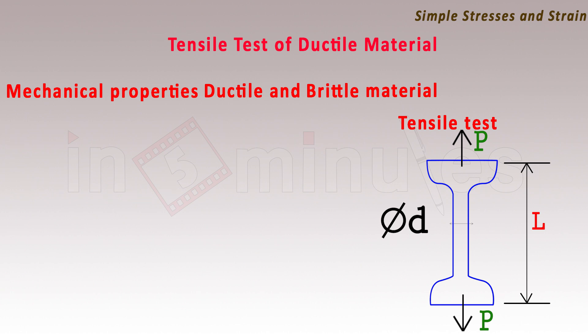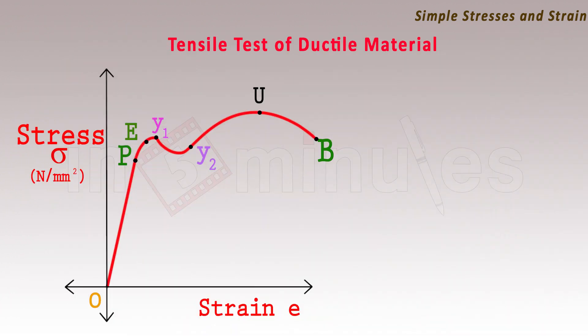As the load is applied, we can measure two properties in the tensile test. As the load is gradually increased, we can continuously measure stress sigma, given by P upon A, where A is the original cross-sectional area. We can also measure the strain e, which is given as delta l by L. The tensile test is carried out until the specimen fails or breaks, and from start to failure we measure stress and strain and plot it on a diagram called as the stress-strain diagram.